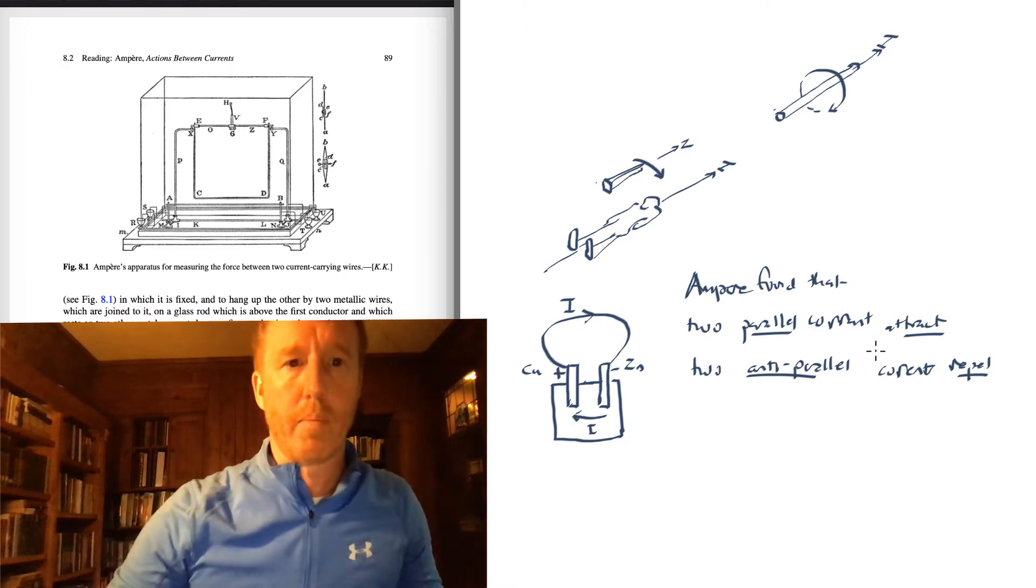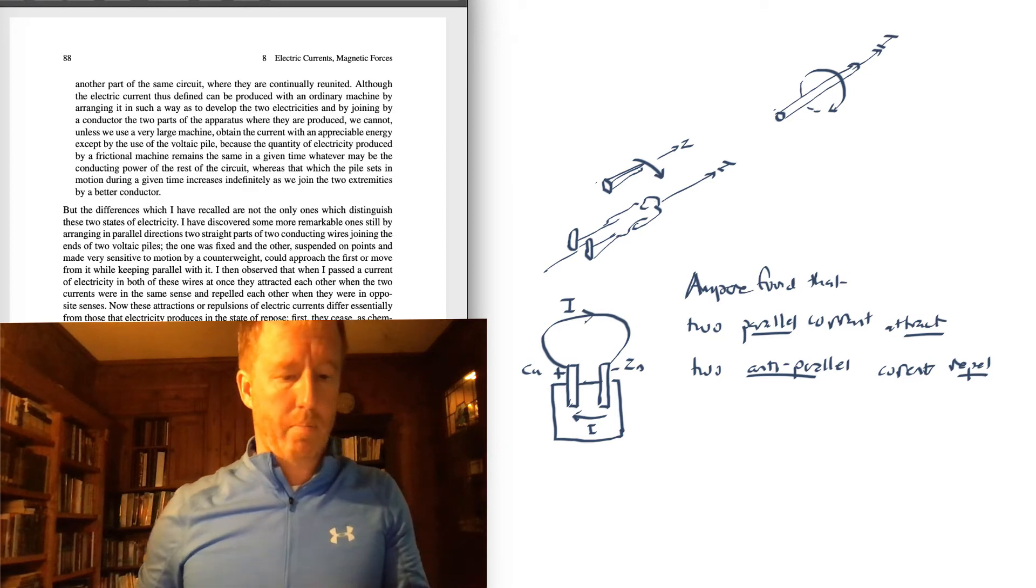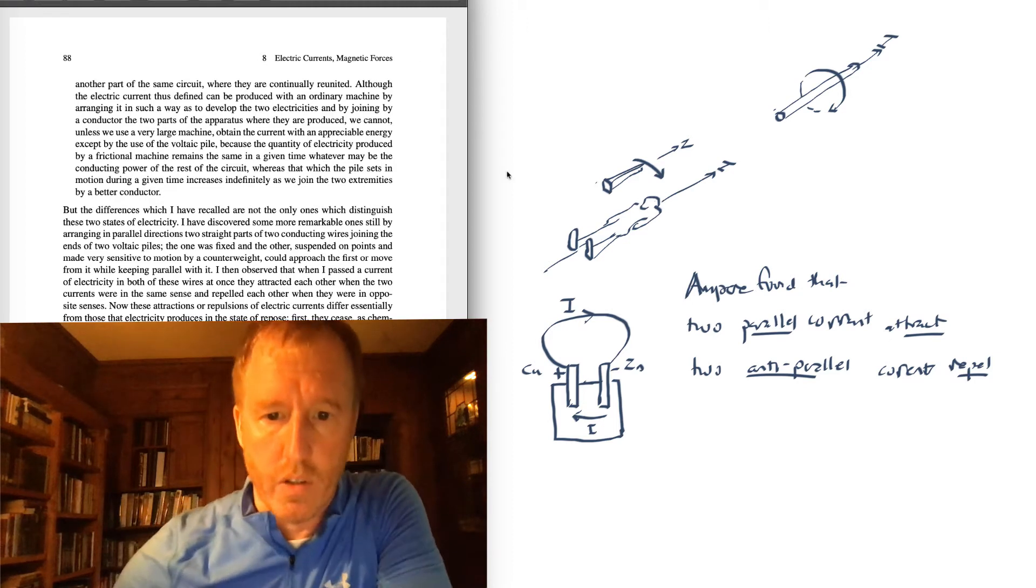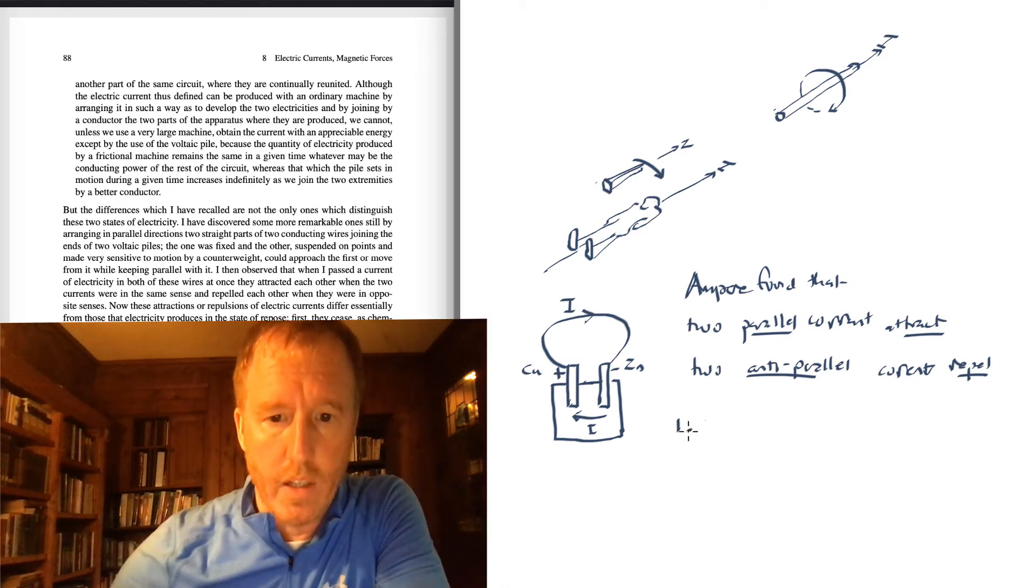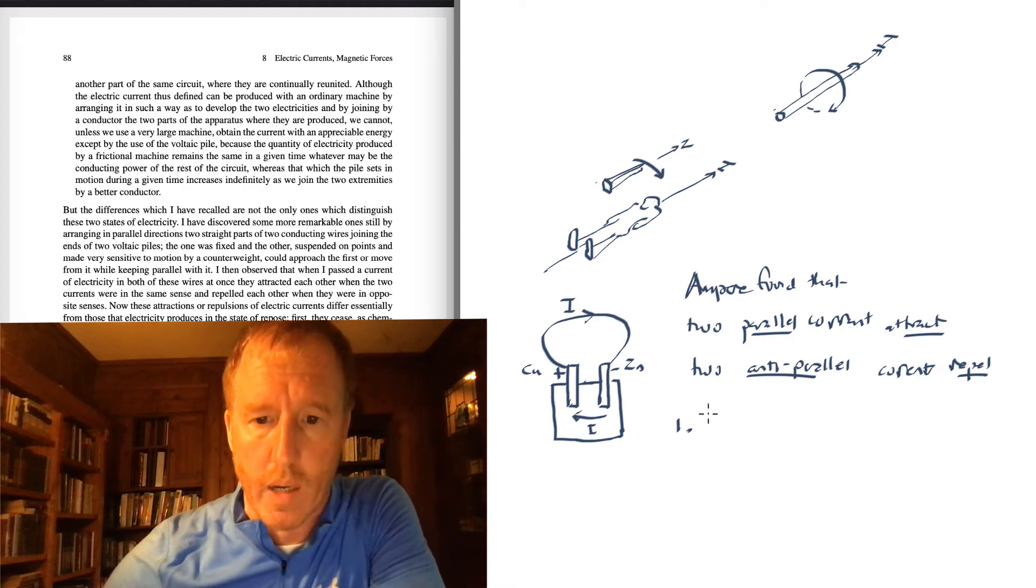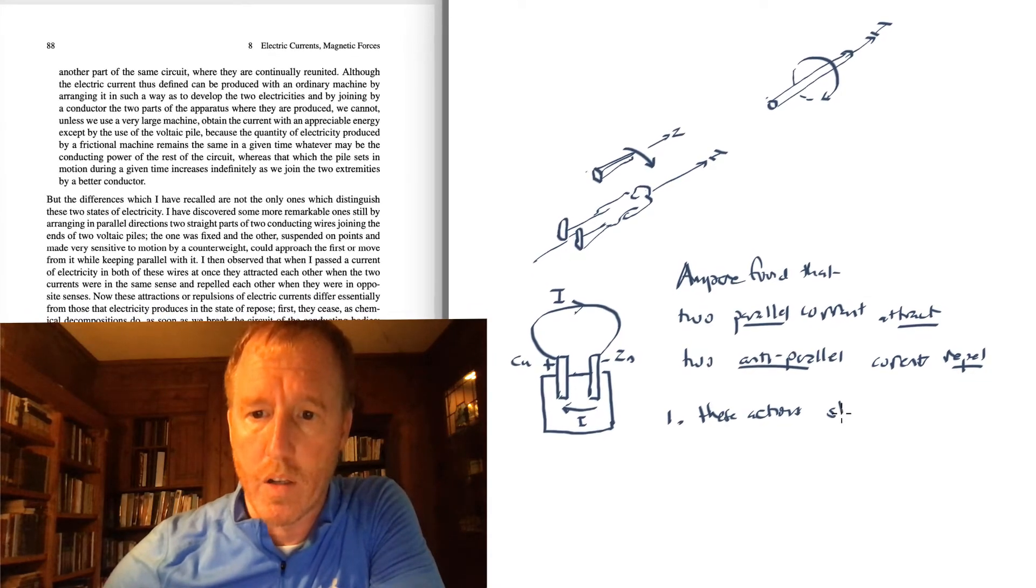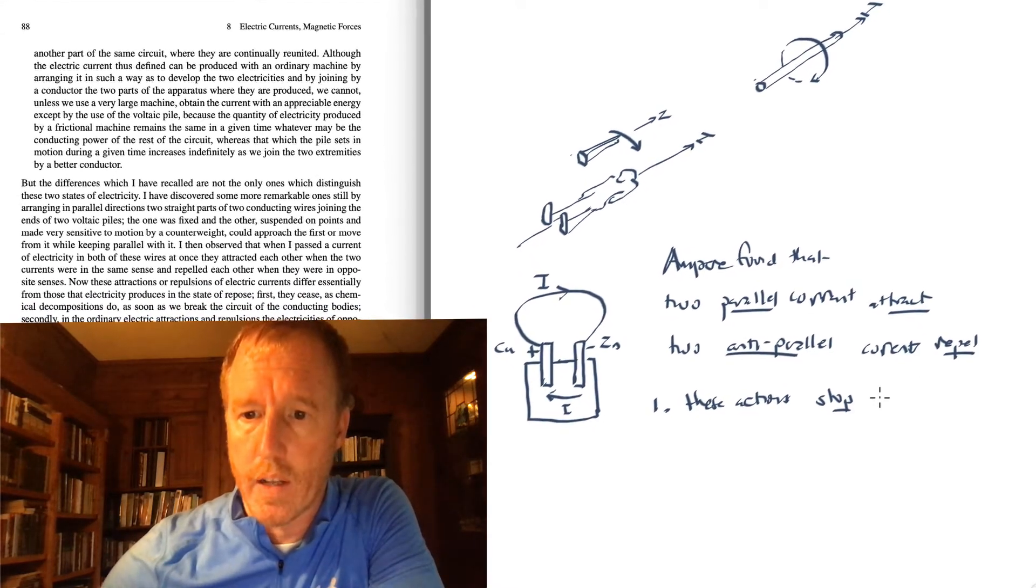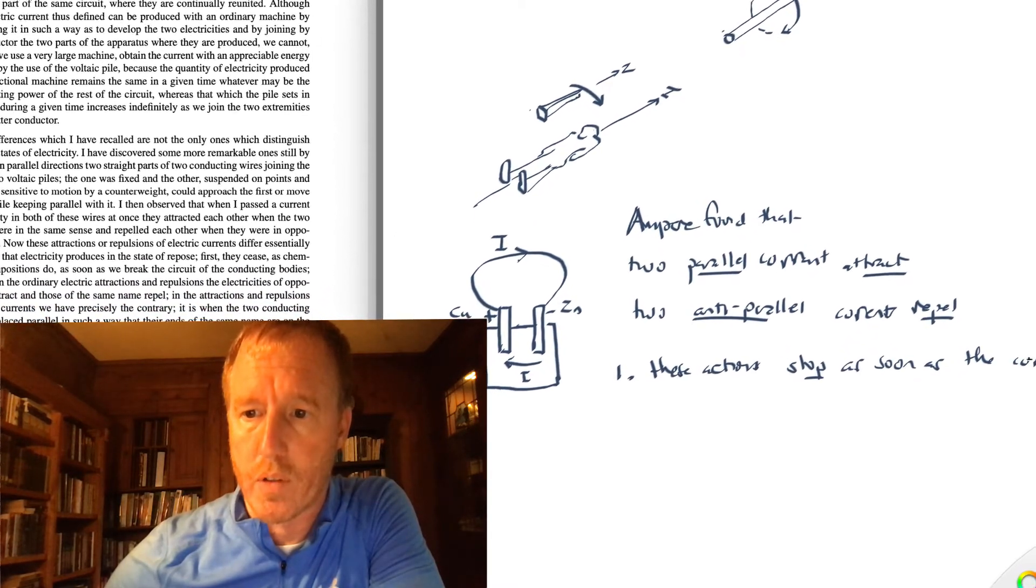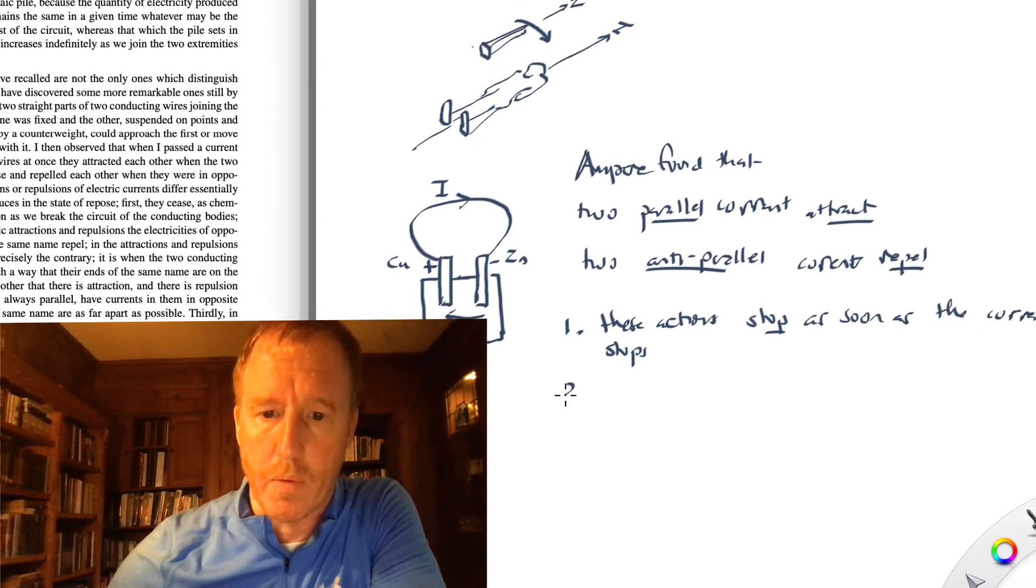On the previous page, page 87, he mentions some of the important experimental observations. Okay, so what he says is, first of all, that these attractions or repulsions cease as soon as the current stops. So these actions or forces stop as soon as the current stops. That's an important experimental observation that he makes.